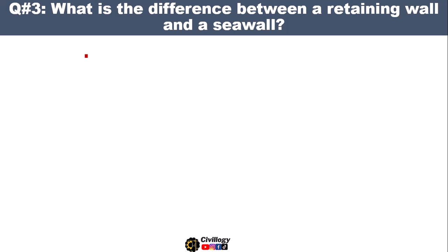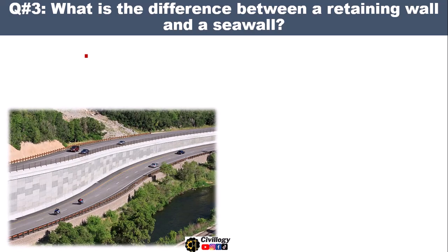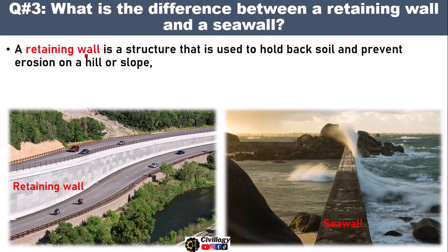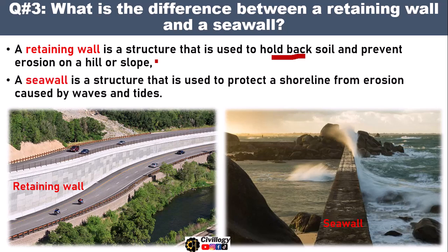Question number three, asked during interview: what is the difference between a retaining wall and a sea wall? A retaining wall is a structure that is used to hold back soil and prevent erosion on a hill or slope. Whereas a sea wall is a structure that is used to protect a shoreline from erosion caused by waves and tides.